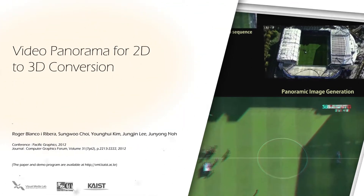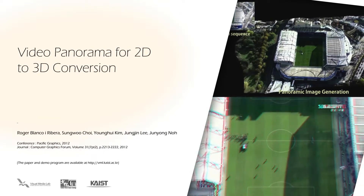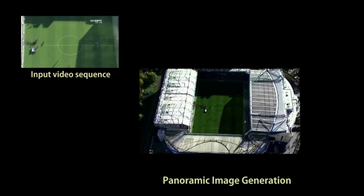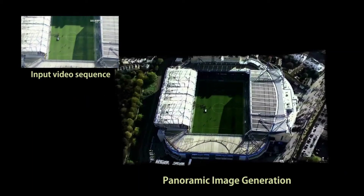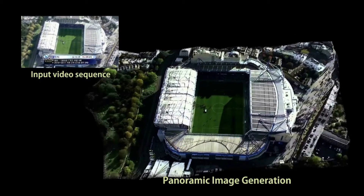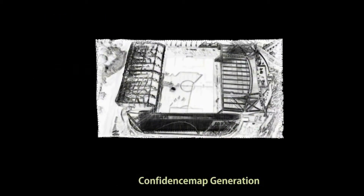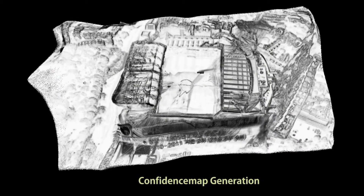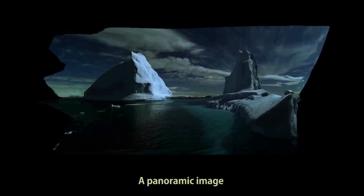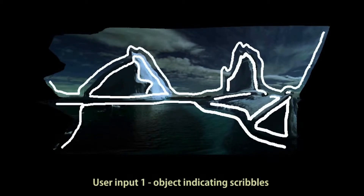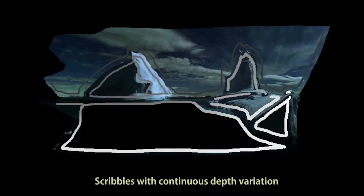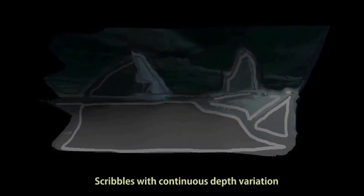We present a novel approach to construct a temporally coherent depth map for each image in a sequence. Our approach first combines the video sequence into a panoramic image. Based on the panoramic image, we create a confidence map to evaluate the reliability of the generated panoramic image. A user can scribble on this single panoramic image to specify depth information, which is then propagated to the remainder of the panoramic image.